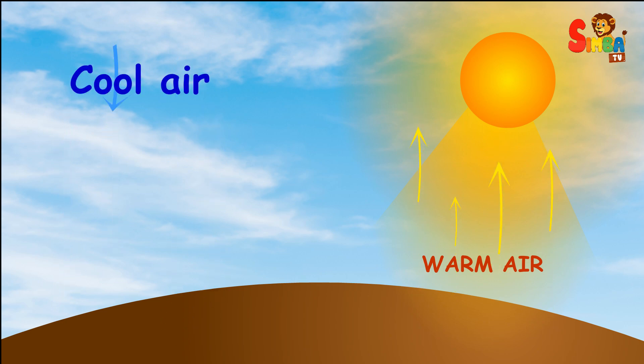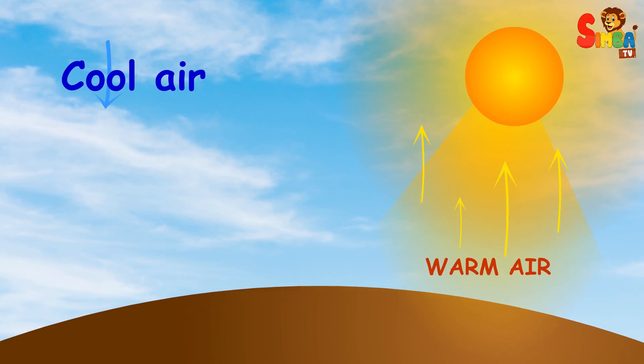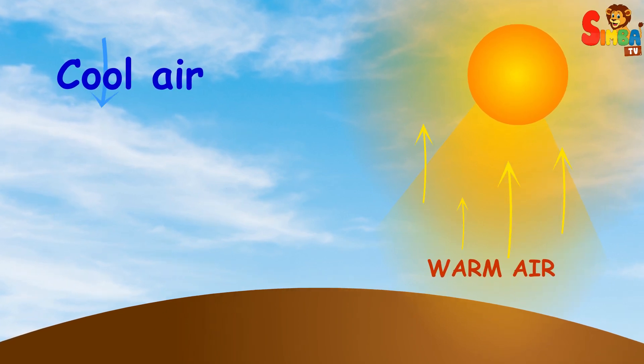The sun's energy is not distributed evenly across the globe. The equator receives more direct sunlight, while the polar regions receive less. This temperature difference creates variations in air pressure.